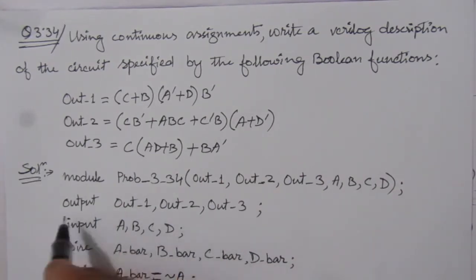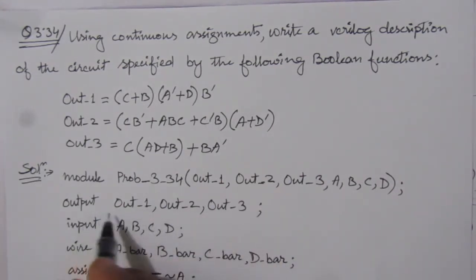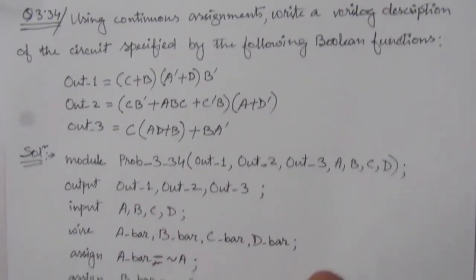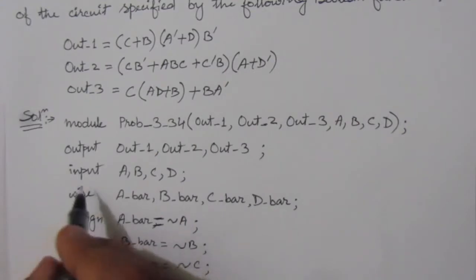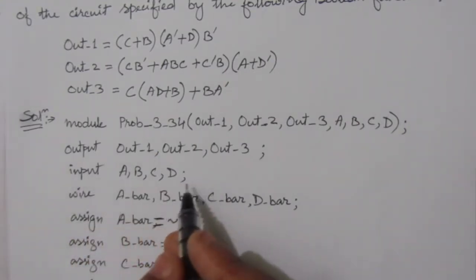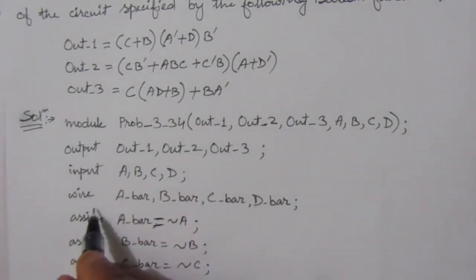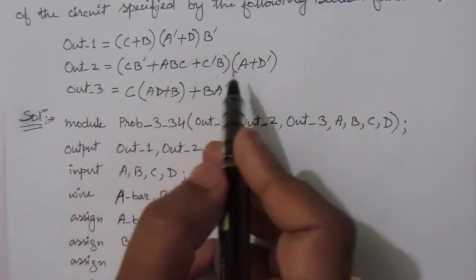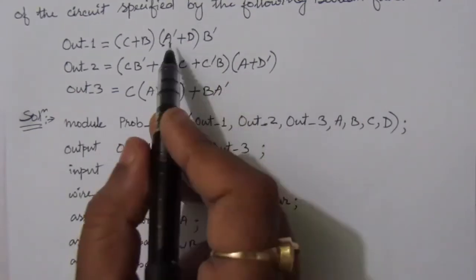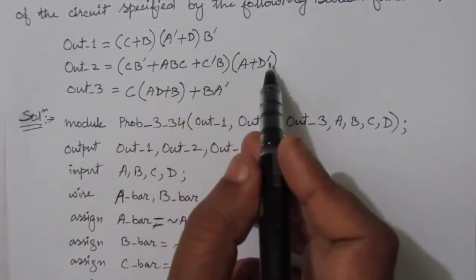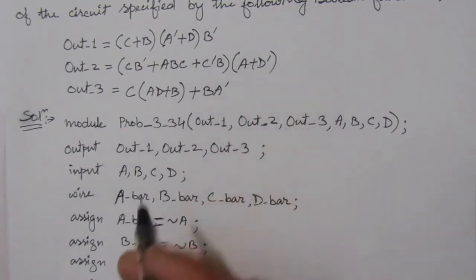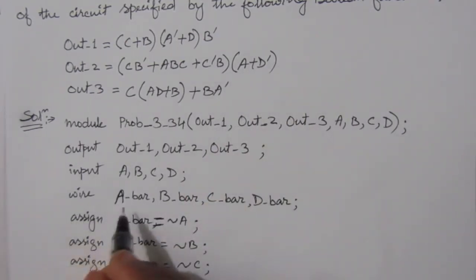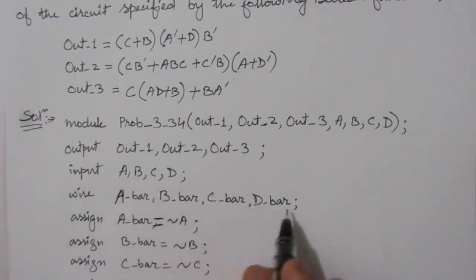We have to define the outputs: out_1, out_2, and out_3. The inputs are A, B, C, and D. Then we have to declare some wires, because in these equations we can see that there are some complements — A complement, B complement, C complement, as well as D complement. So we will assign wires: A_bar, B_bar, C_bar, and D_bar.